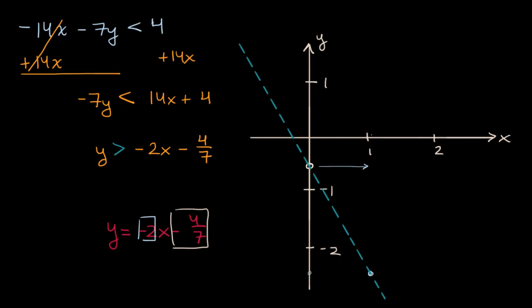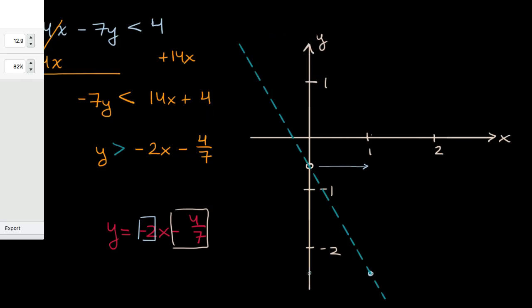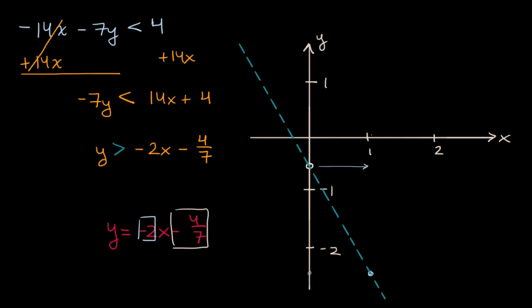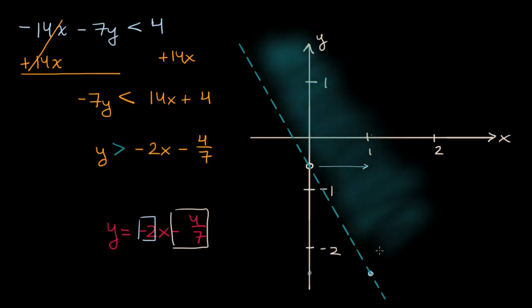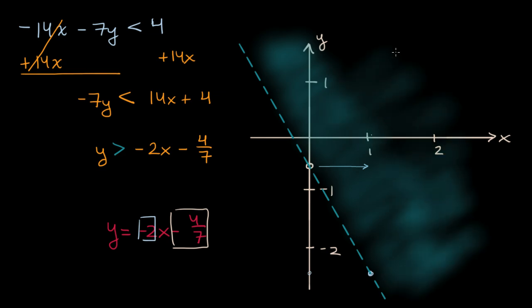So let me shade that in. So that's going to be all of this. Actually I can shade it in with a nice big juicy shading. Get the right tool out. Alright, here we go. So it would be all of this area right over here would be what I would actually shade in. So once again I don't include the line, I include everything above the line. And I am done.